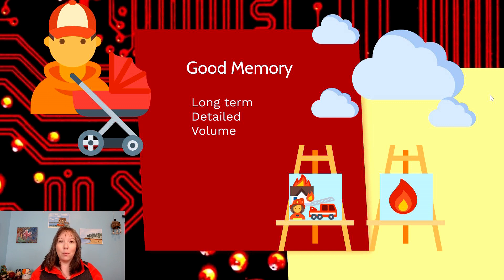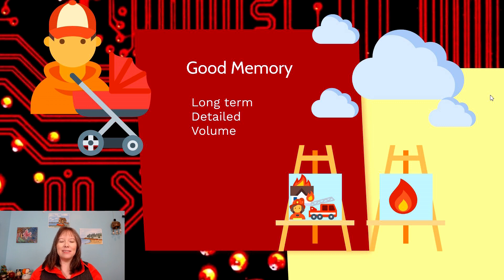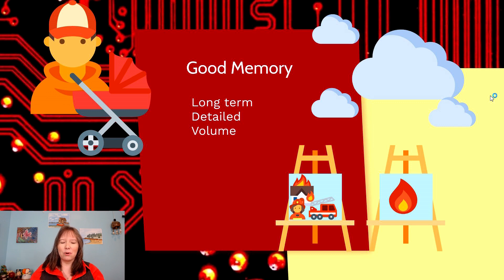A good memory may also be one that's more detailed. Perhaps if you remember a very traumatic event from your childhood, such as a house fire, you can recall exactly how the fire spread, the sound of the sirens, and what the firefighters said when they arrived. Or perhaps you can't recall that detailed information — you just remember being there when the fire happened, but the memory is sort of hazy.